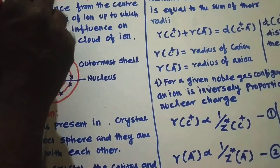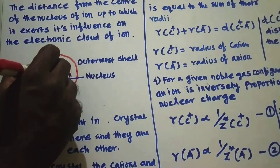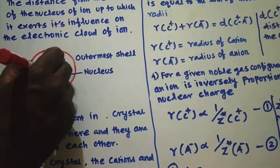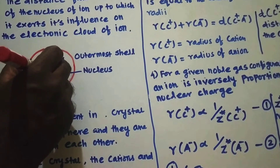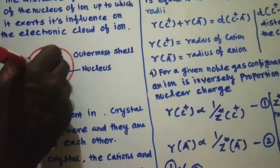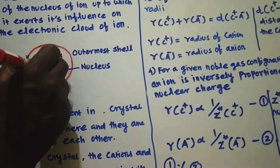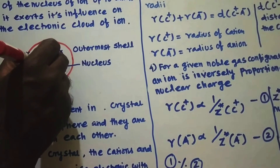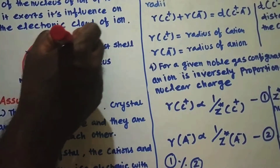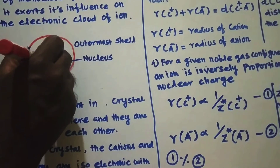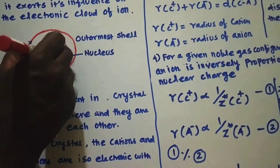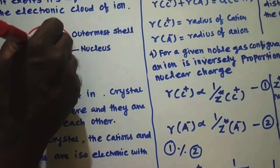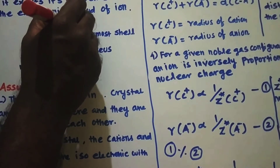According to the definition, it is the distance between the center of the nucleus to which it exerts its influence. The nucleus contains protons, and as a result it has a positive charge. The electrons have a negative charge. Therefore, the nucleus is always attracting the electrons towards itself, exhibiting an attractive force on the electrons up to the last or valence shell.